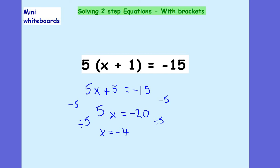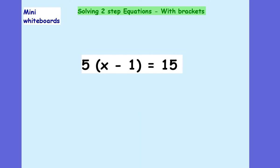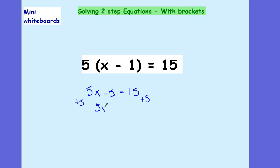How about now? Now we've got 5x take away 5 equals 15. We need to add 5 to both sides this time, which leaves us with 5x equals 20, and dividing by 5 leaves us with x is equal to 4.